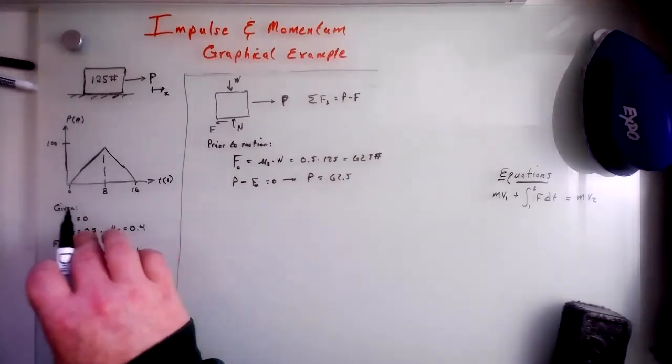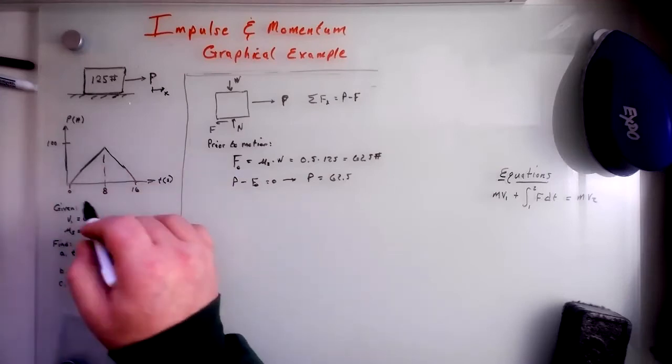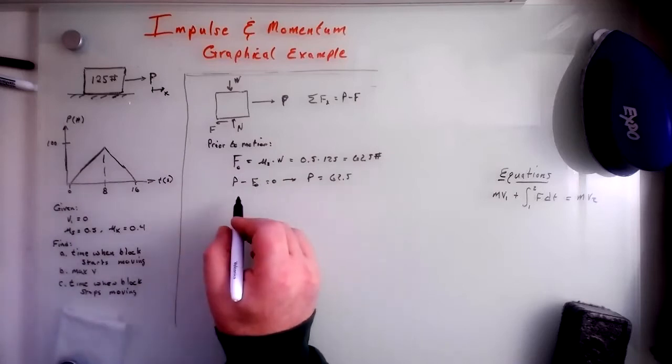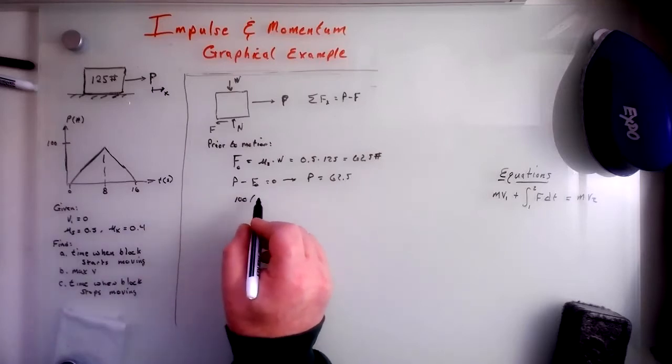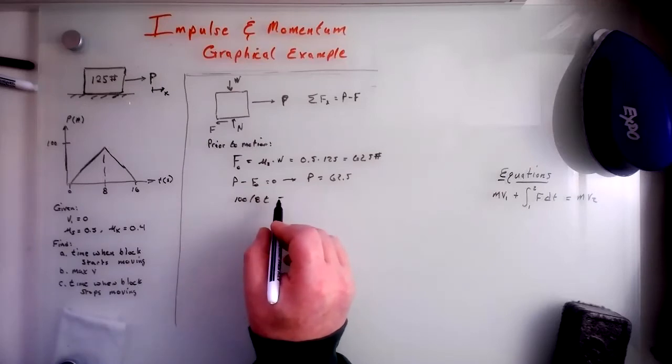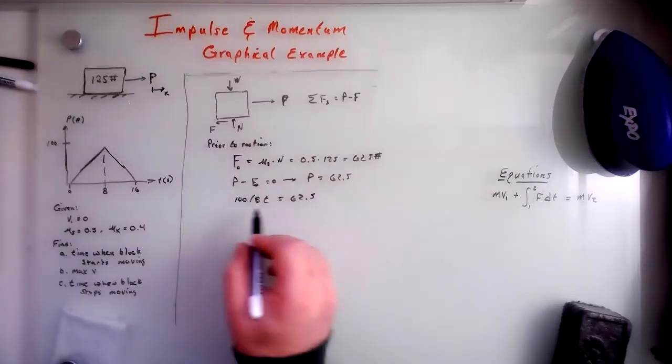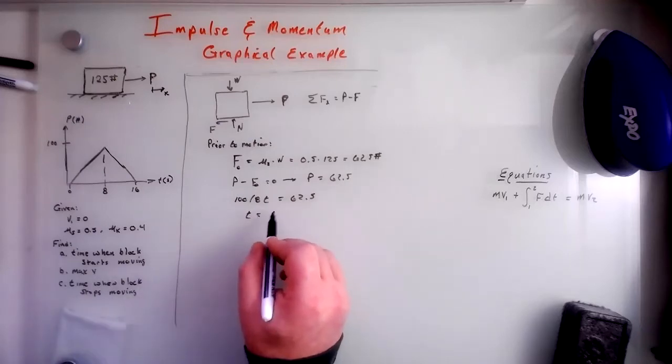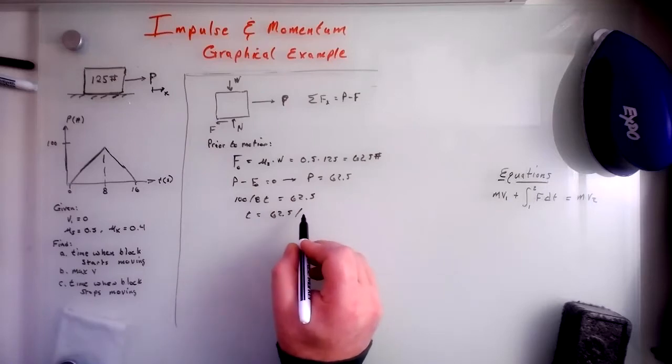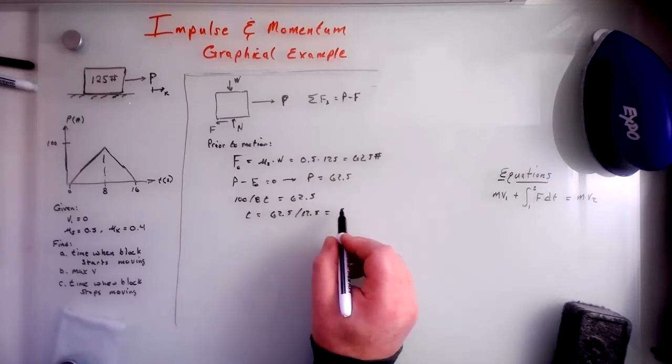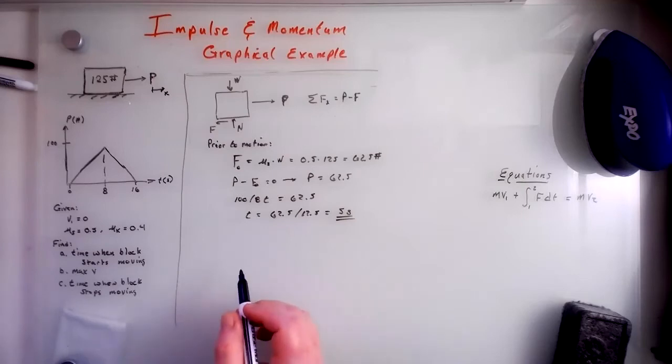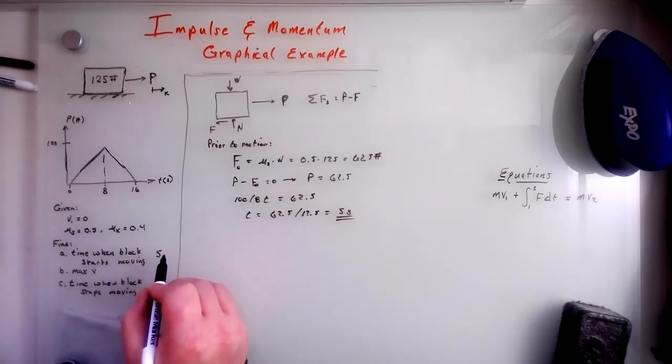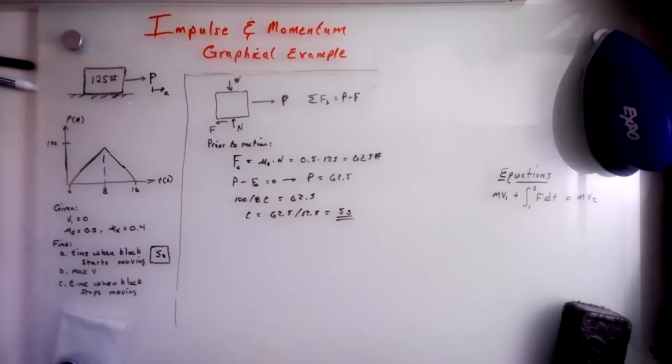Well, what is p? p is rising. So it's m, the slope. So where's that? 100 over, I guess it's 100 over eight, right? Times t. So 100 over eight t equals 62.5. And when we solve this for t, then we get t is equal to 62.5 divided by 12.5 or five seconds. So let's put this right here. We'll say five seconds. Let's put this in a box.